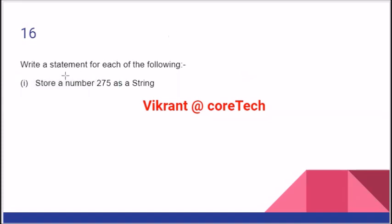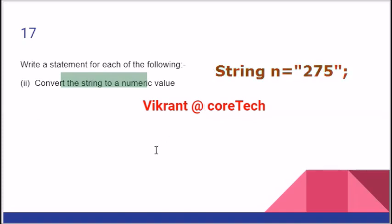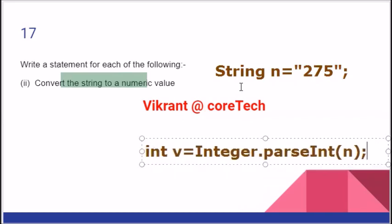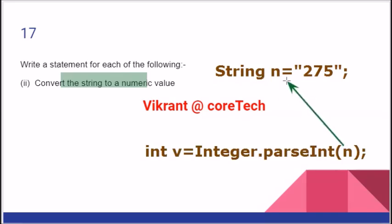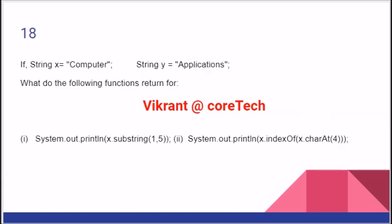You have to store a number as a string. String N equals — please don't write 275 directly; you are supposed to put it in double inverted commas because it is a string. Now the second part: convert the string into a numeric value. That means int value equals Integer.parseInt(N). So this code requires two lines. You have to be very particular and smart when selecting the best appropriate MCQ.